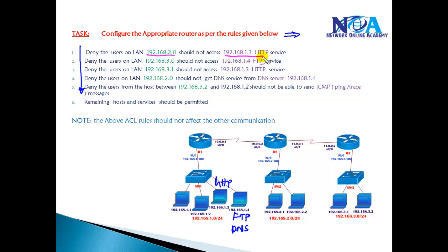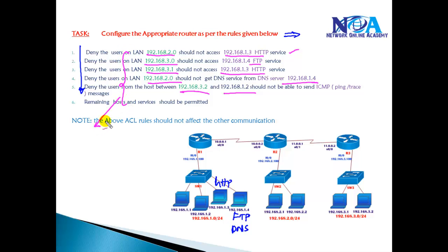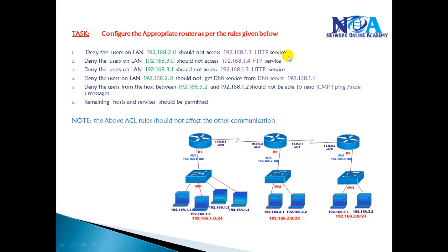The rules are: the 2.0 network should not access the 1.3 HTTP service, but can access all remaining services. The 3.0 network should not access the 1.4 FTP service, and host 3.1 should not access 1.3 HTTP service. The 2.0 network should not get DNS service from 1.4, and some ping messages will also be stopped. Whatever is listed as denied should be denied, and all remaining hosts and services should be permitted.